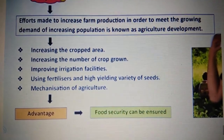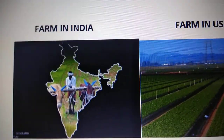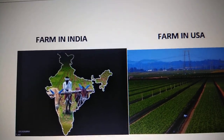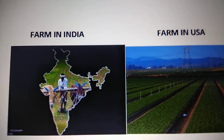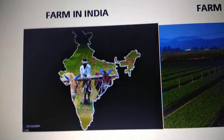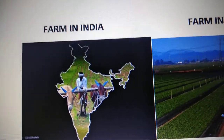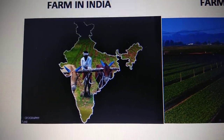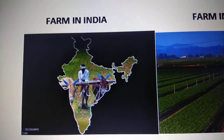Now we come to the last point of our chapter, which is a comparative study between a farm in India and a farm in the USA. Farms in India are usually small in size, typically around 1.5 hectares, and they are small land holdings.